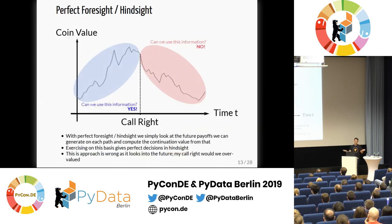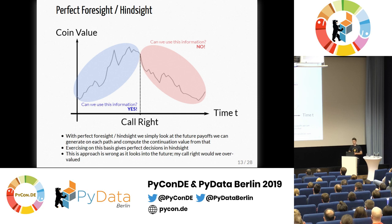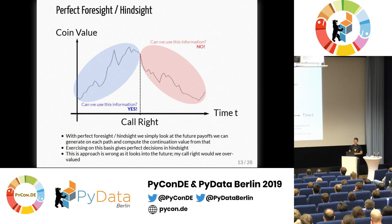First, I thought: that's a simple thing — I've got my path, I know the future, so I can compute the continuation value by looking into the future. So let's say we are today at the call right date, and in order to know what the continuation value is on that path, I just look into the future. That is approximately akin to buying Google stocks in 2004 when worth 50 dollars, knowing that in 2019 it will be worth 1,200. You can model that, but then you will heavily overvalue your call right. Not a good approach.